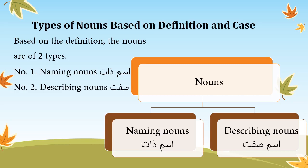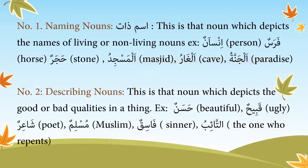Number 1: Naming nouns, or ism-i-zat. This is that noun which depicts the names of living or non-living nouns. Examples: insanun (person), farasun (horse), hajarun (stone), al-masjidu (masjid), al-gharu (cave), and al-jannatu (paradise).